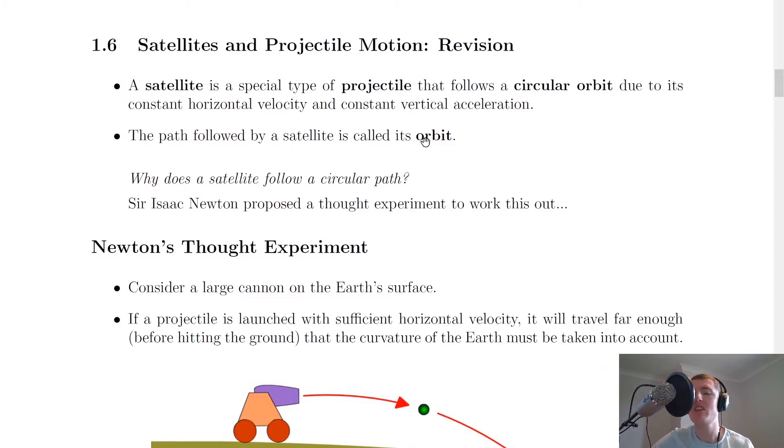The path followed by a satellite is called its orbit. And then we've got a question: why does a satellite follow a circular path? Well, Sir Isaac Newton proposed a thought experiment to work this out, known as Newton's thought experiment. I'm going to take you through the simulations to show you how it works.